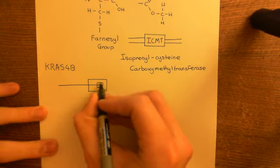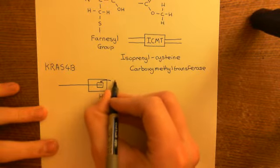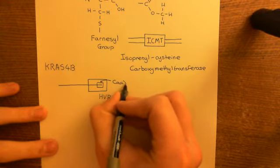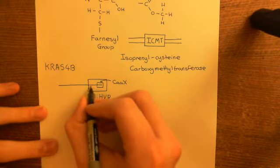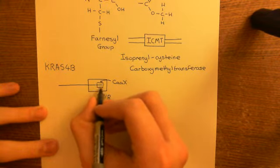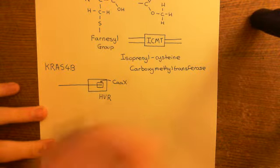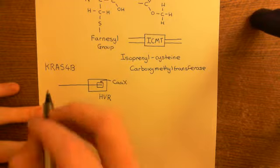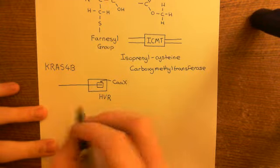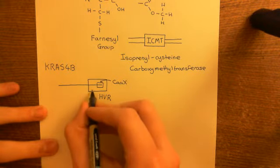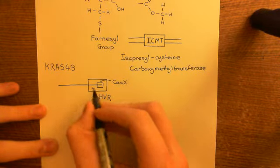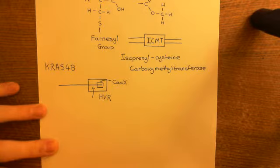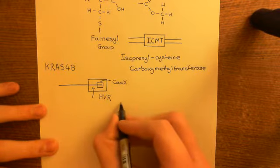The hypervariable region contains the CAAX box — the final four amino acids. There are also upstream amino acids within this hypervariable region. In the hypervariable region of the KRAS-4B protein, you have six lysine amino acids all next to each other — a string of consecutive lysines.